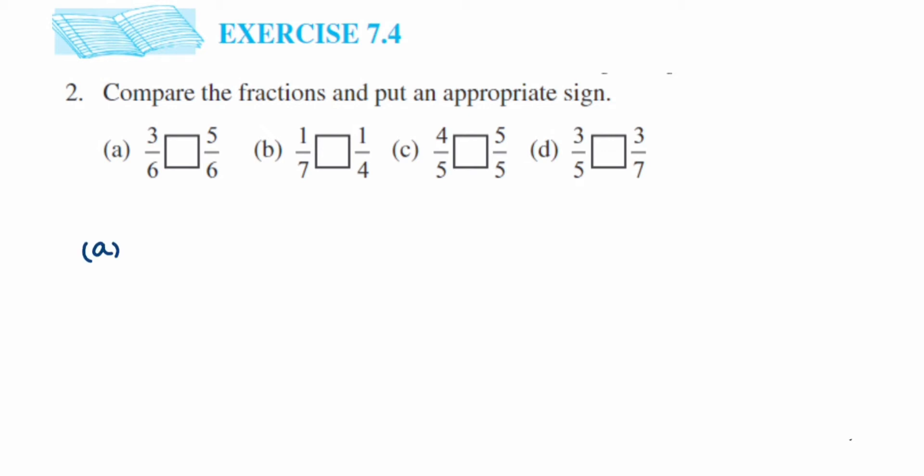We have given a like fraction here where denominators are same. So in like fractions we have to check the numerator. Greater the numerator, greater will be the fraction. Here 5 is greater than 3, so we can say that 5 by 6 is greater than 3 by 6.